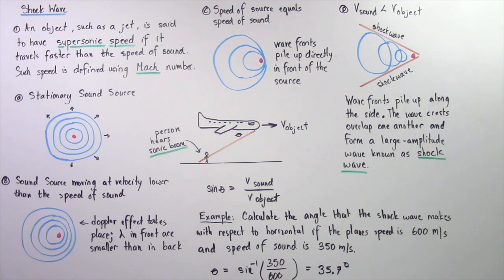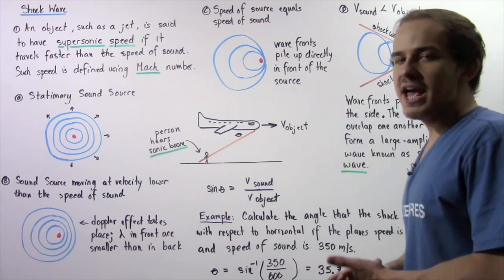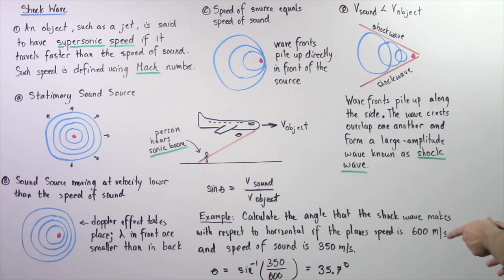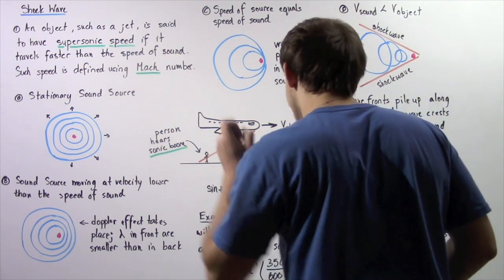So let's look at the following example. Calculate the angle that the shock wave makes with respect to the horizontal if the plane's speed is 600 meters per second and the speed of sound in the air is 350 meters per second. So because the object is moving at supersonic speed,